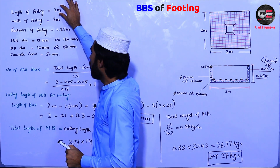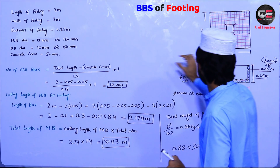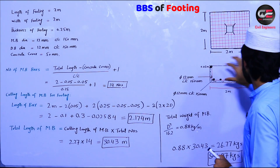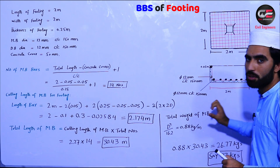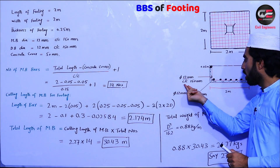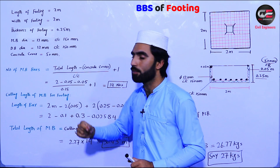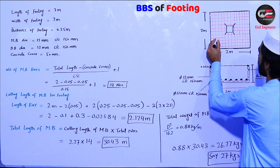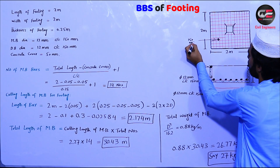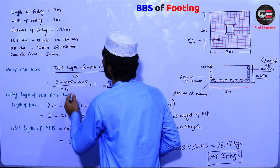Let's start. Length of the footing is 2 meter and width of the footing is also 2 meter — this is a square footing. Thickness of the footing is 0.25 meter. Main bar diameter is 12 mm with spacing of 150 mm. Distribution bar diameter is also 12 mm with spacing of 150 mm. Concrete cover is 50 mm or 0.05 meter.